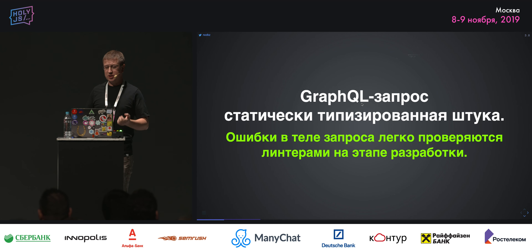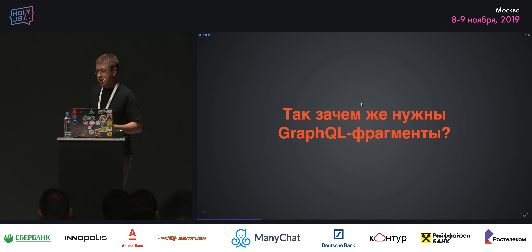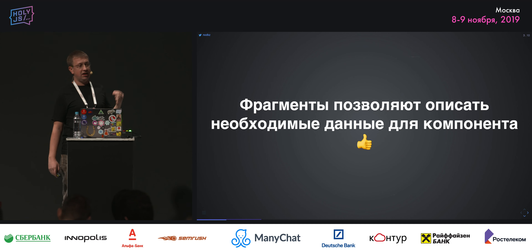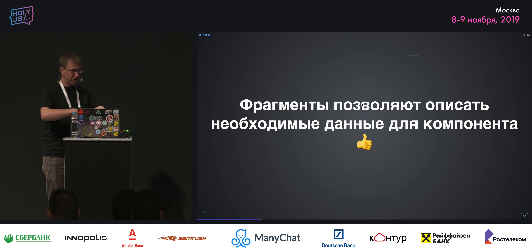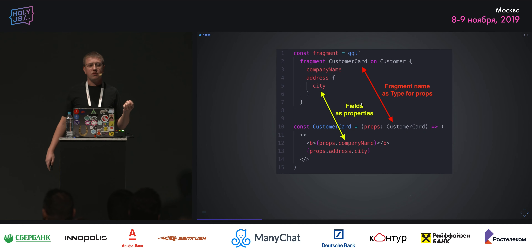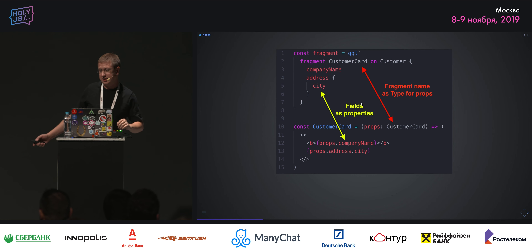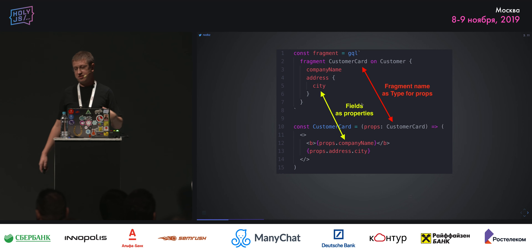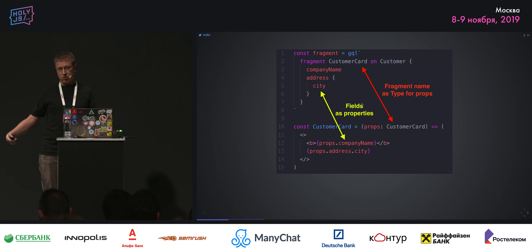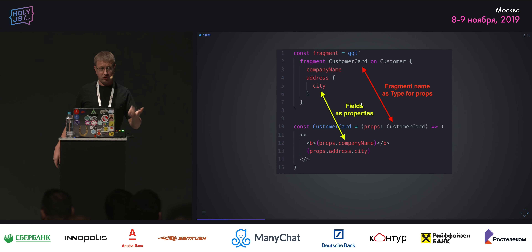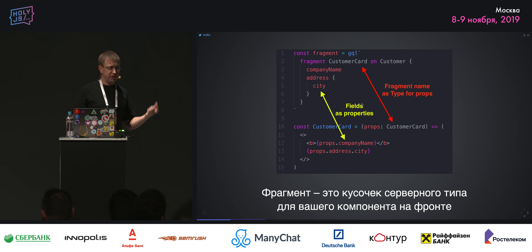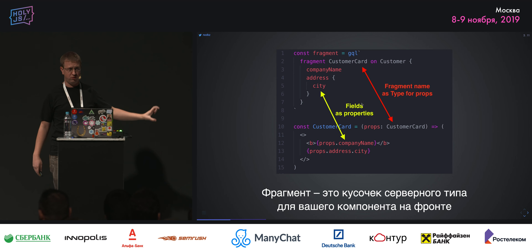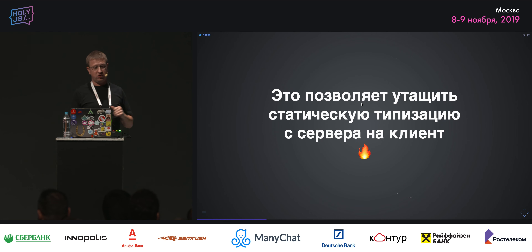GraphQL — статически типизированная штука, и ошибки легко проверяются линтерами на этапе разработки. Фрагменты позволяют описывать данные для компонента. Помимо модульности, в Facebook уже генерируются prop types там, где компоненты отображают данные сервера через GraphQL фрагменты. Из customer_card фрагмента можно сгенерировать TypeScript или FlowType тип и использовать его в качестве пропсов для компоненты. Фрагмент — это кусочек серверного типа: серверный тип Customer богатый и жирный, но мы берём только тот кусочек, который используется в нашей компоненте. Это позволяет уточить статическую типизацию сервера на клиенте.